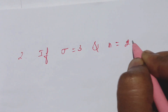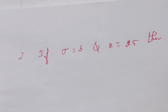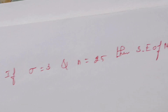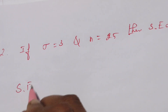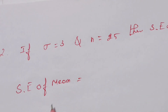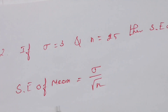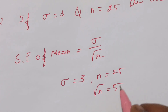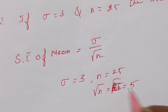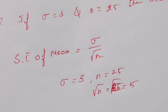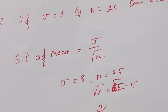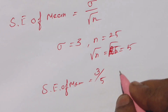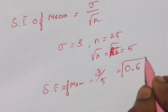Next question: if sigma equals 3 and n equals 25, find the standard error of the mean. The standard error of the mean formula is sigma divided by root of n. Substituting, sigma is 3 and root of 25 is 5, so standard error of the mean equals 3 divided by 5, which equals 0.6.